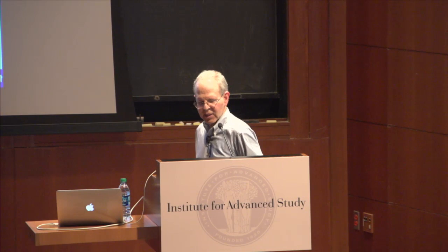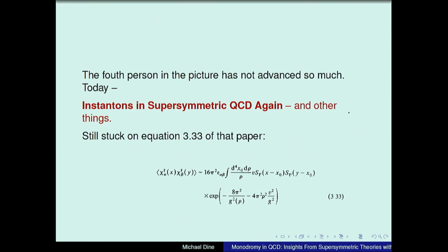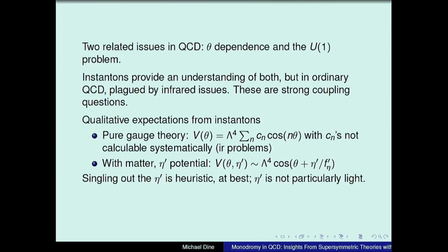I'm sort of still stuck on one of the equations in this paper, as we'll see, and I'll kind of explain. I sort of chose this — it was the closest I could find to what I was looking for. I want to talk today about two related issues in ordinary QCD: theta dependence and the U1 problem.